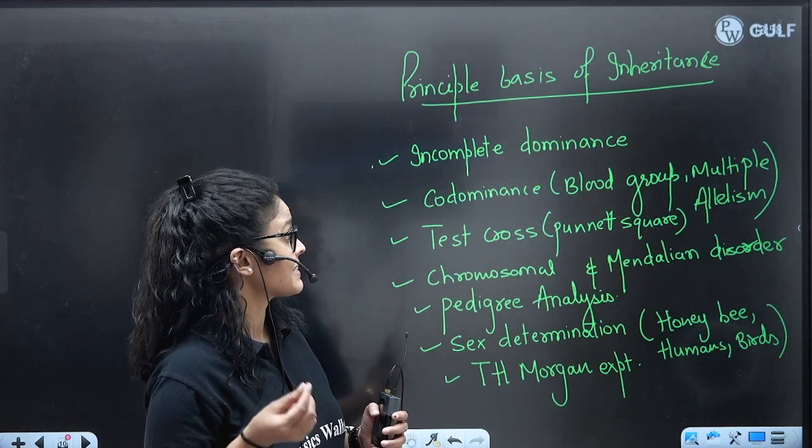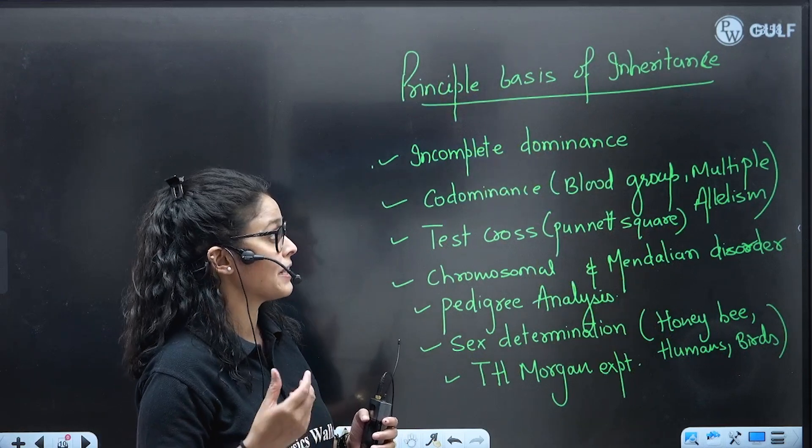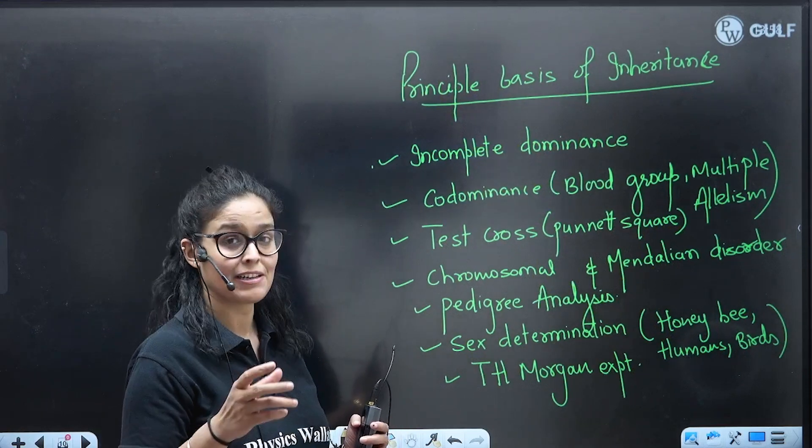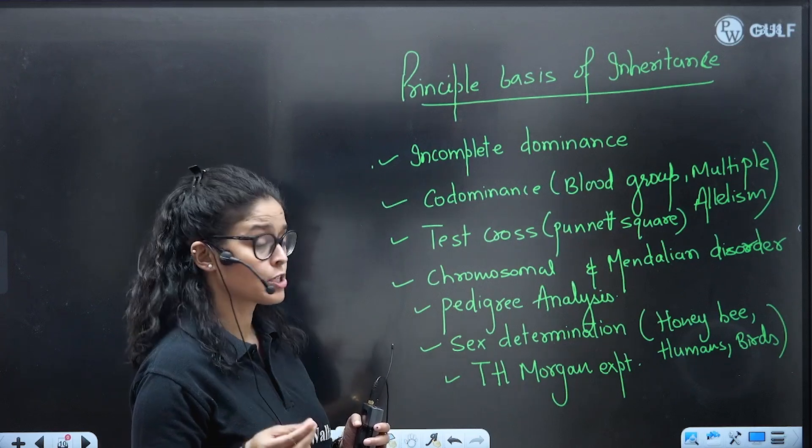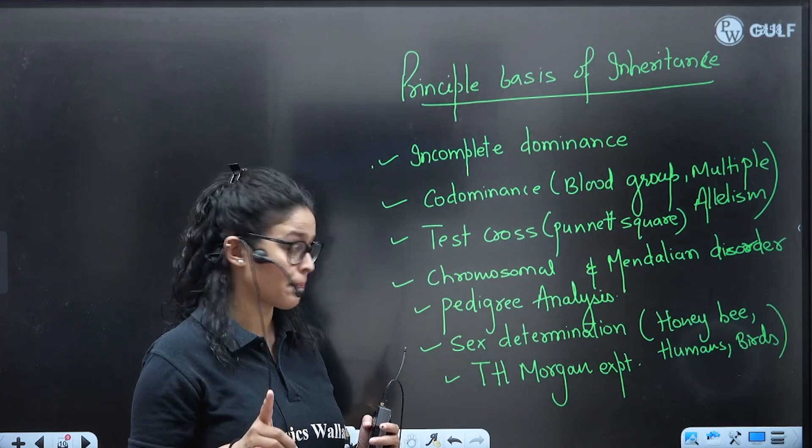Principles of Inheritance: incomplete dominance, co-dominance. Blood group is the best example and also example of multiple allelism, so you might find questions from here. Test cross with the Punnett square - make sure you are practicing Punnett square.